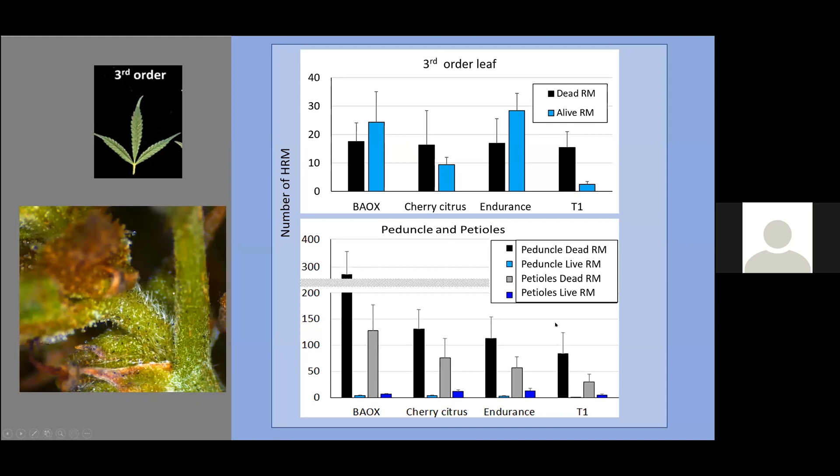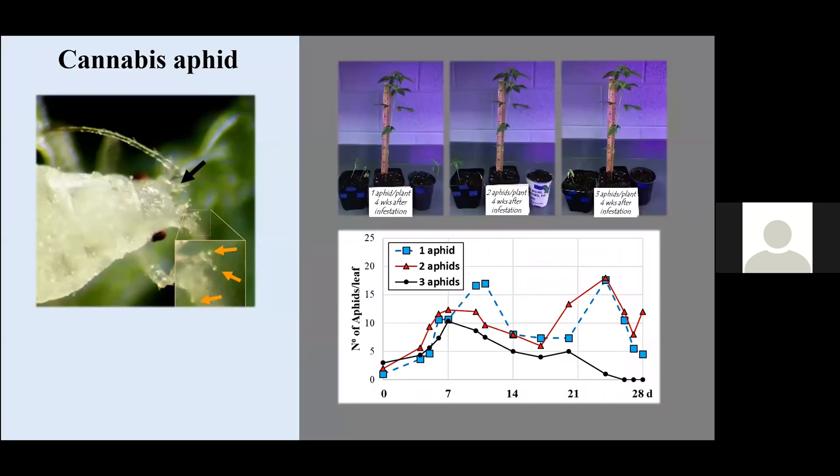I don't know if this cultivar is resistant. I need to do further evaluation. Last year we reported the presence of the cannabis aphid. This is an aphid that is specific to hemp. We did some inoculations of infestation of plants in the laboratory. Plants that were infested with one aphid per plant, two aphids per plant, and three aphids per plant. If they are not controlled, these aphids can kill the plants in less than two weeks.